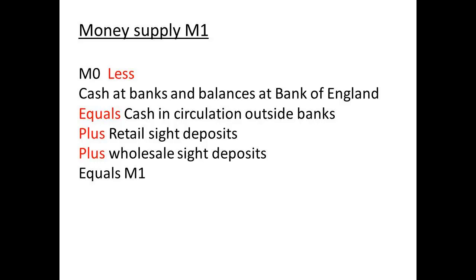Now this may look complicated, but it's actually simple. Take the cash as coin and notes at the bank and remove these. You are left with coin and note in circulation, to which we then add sight deposits. This gives us a value for M1.